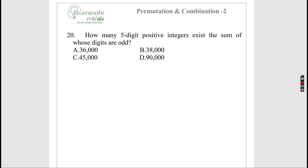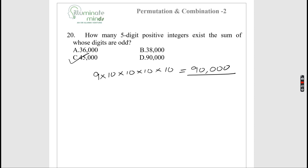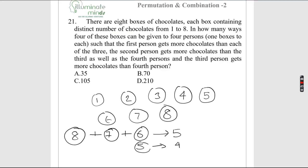For hybrid numbers (4-digit numbers), the total count is 9×10×10×10 = 9000. Since half will have an even digit sum and half will have an odd digit sum, the answer is 9000/2 = 4500... wait, total 4-digit numbers are 9000, so the answer is 45000. The answer is 45000.